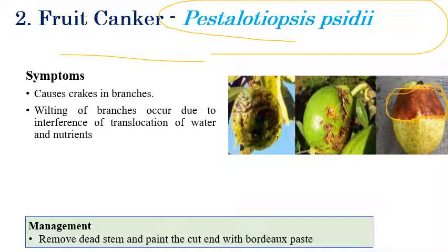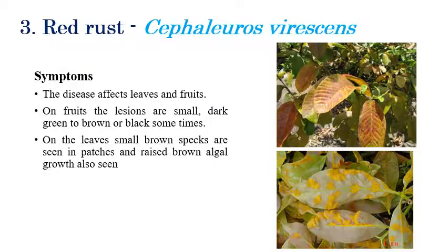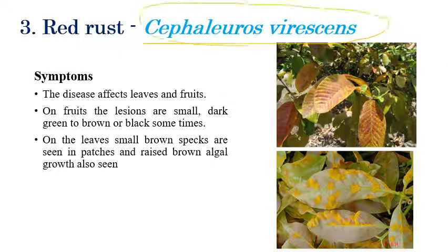For management of fruit canker, remove dead stems and paint the cut end with Bordeaux paste. Coming to red rust, which is caused by Cephaleuros virescens — this is an algal disease and a very important one. We can clearly see red color or orange color rust pustules on the lower surface of the leaf.